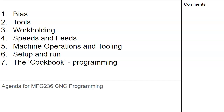Item one is our biases to the tools. We're going to look at workholding, mention speeds and feeds and how some of those things are calculated, and then machine operations and tooling, and go from there.